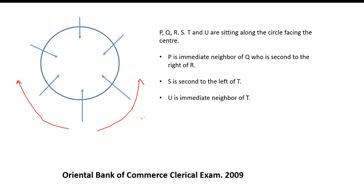Once you have decided this, we go for the conditions. The first condition is that P is an immediate neighbor of Q — it may be to the left hand side or to the right hand side — who is second to the right of R. From this we cannot decide the actual position of P, Q and R.